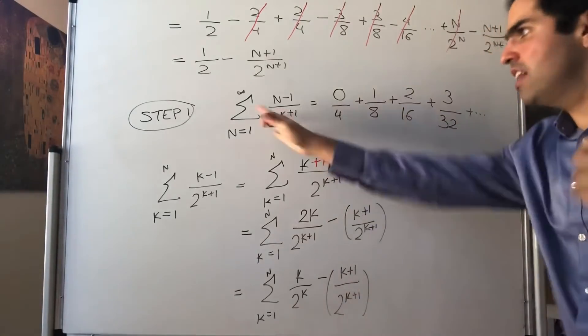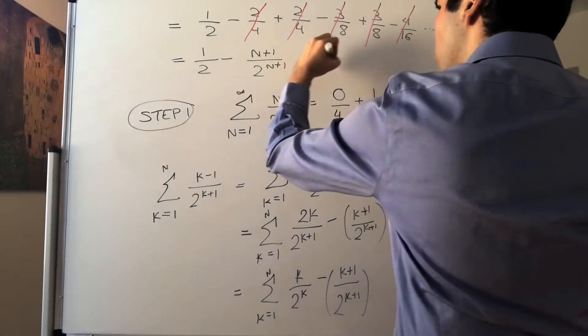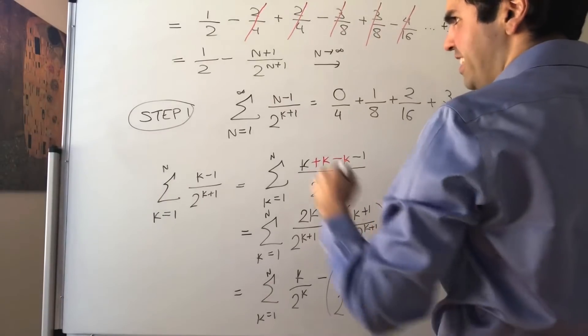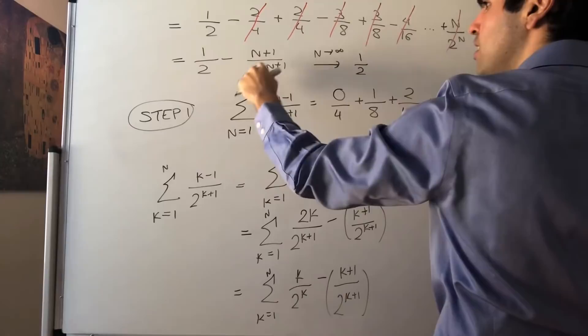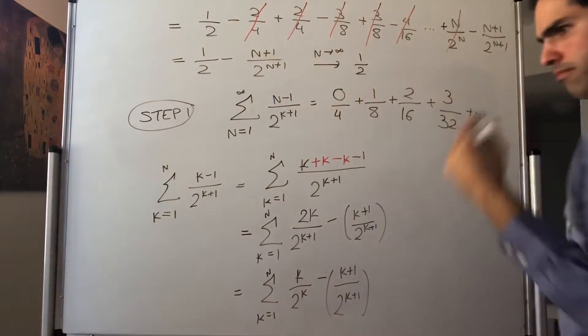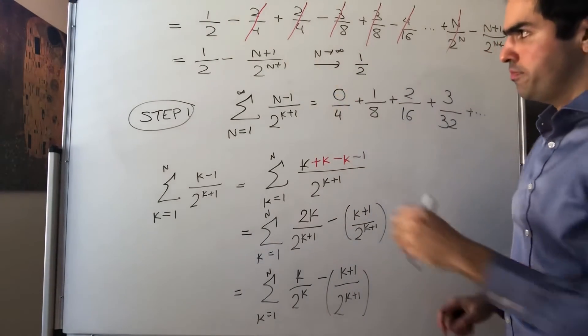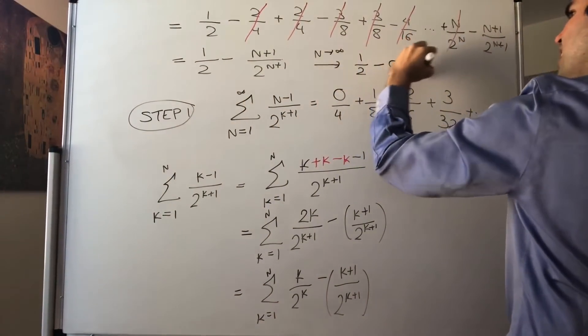And then to find a value of the series, you just need to let that partial sum go to infinity. So you let n go to infinity. And then, well, 1 half becomes 1 half. And this, you see, exponential functions grow so much faster to infinity than polynomials. So actually, this whole thing goes to zero.